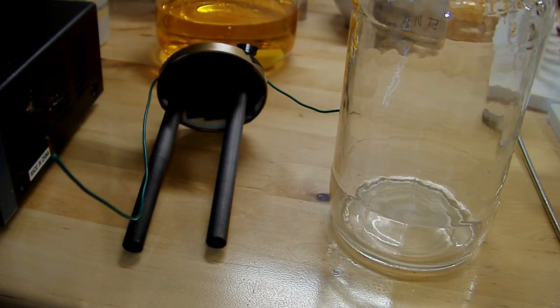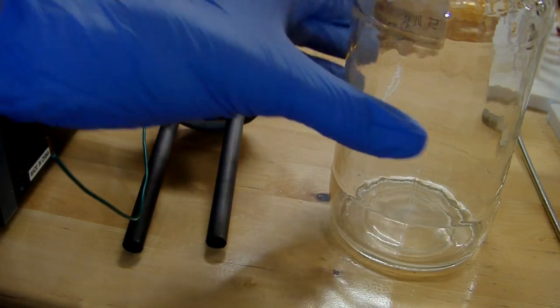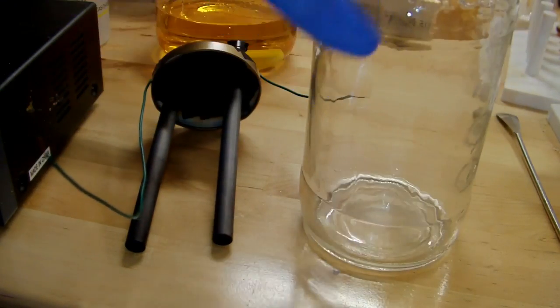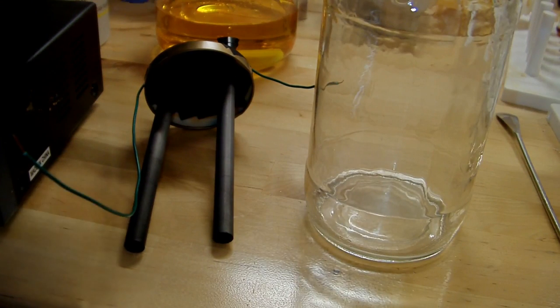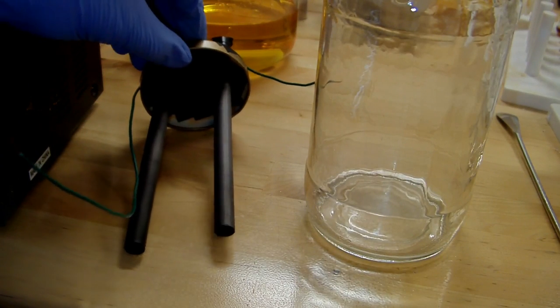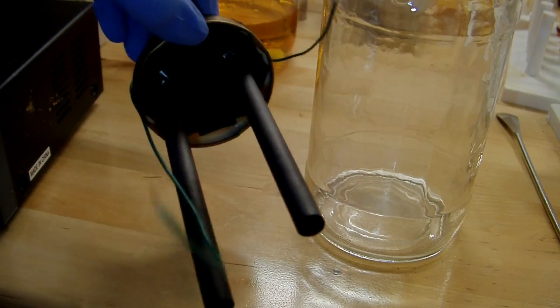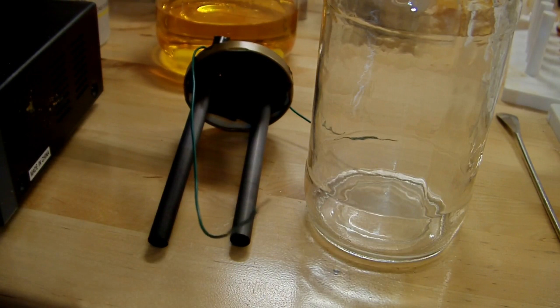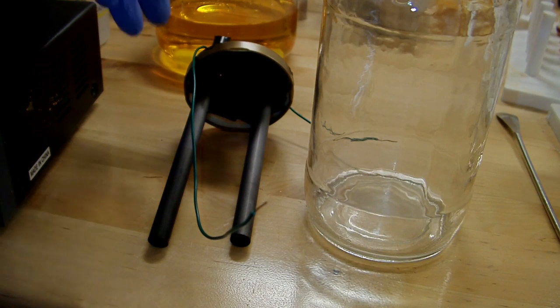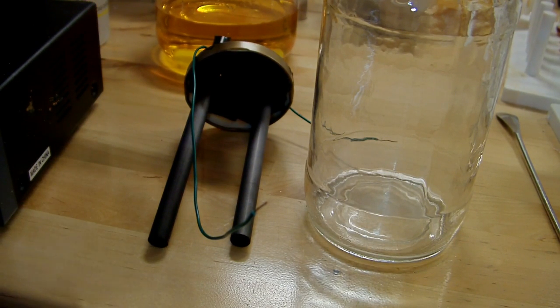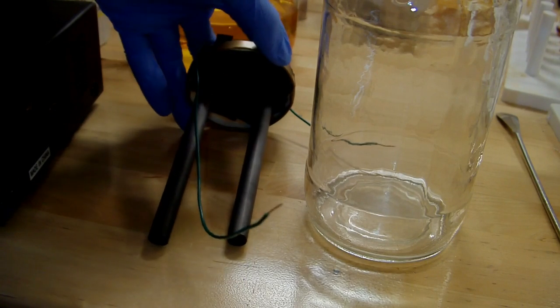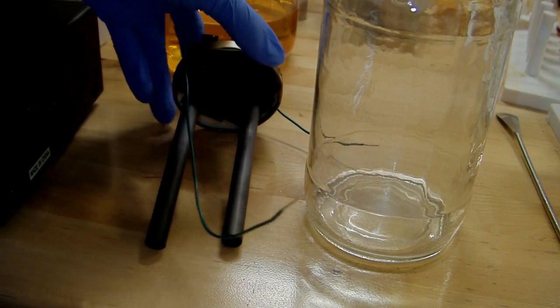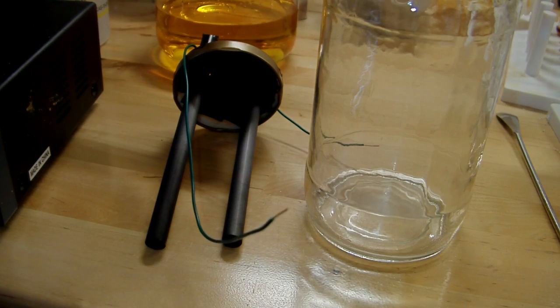Okay, so here's my electrolysis cell. All it is is a mason jar. It's actually a spaghetti sauce jar that I have left over. And in the cap I've put two graphite rods through it. And because this is a metal cap I've insulated everything with electrical tape so that it doesn't short out. These graphite rods I actually got off of eBay. They're used for stirring molten metals. And I've used them before in some of my other videos. But anyways, I'm using graphite here because it won't corrode in the solution and it won't add any impurities.